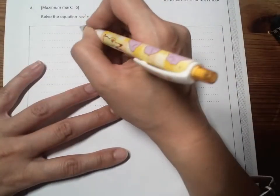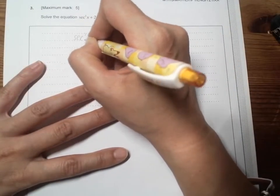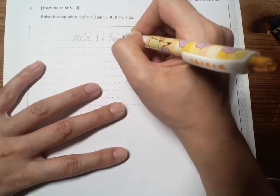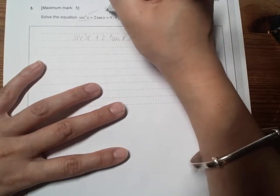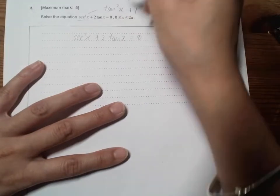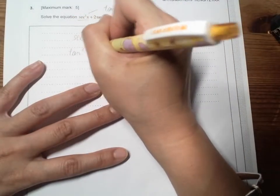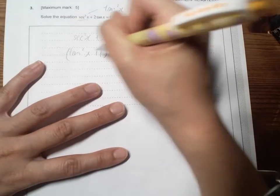Right, this is a trick question. Here we got sec²x + 2tan(x) = 0. Since sec²x equals tan²x + 1, I will have tan²x + 1 + 2tan(x) = 0.